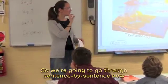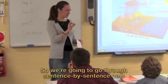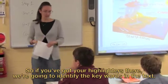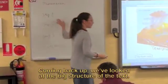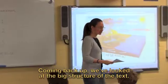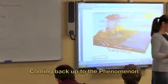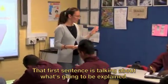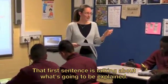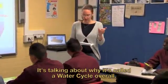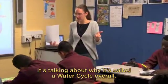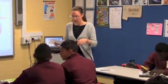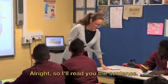We're going to go through sentence by sentence now. You've got your highlighters there and we're going to identify the key words in the text. Coming back up, we've looked at the big structure of the text — coming back up to the phenomenon. That first sentence is talking about what's going to be explained: why it's called the water cycle overall.